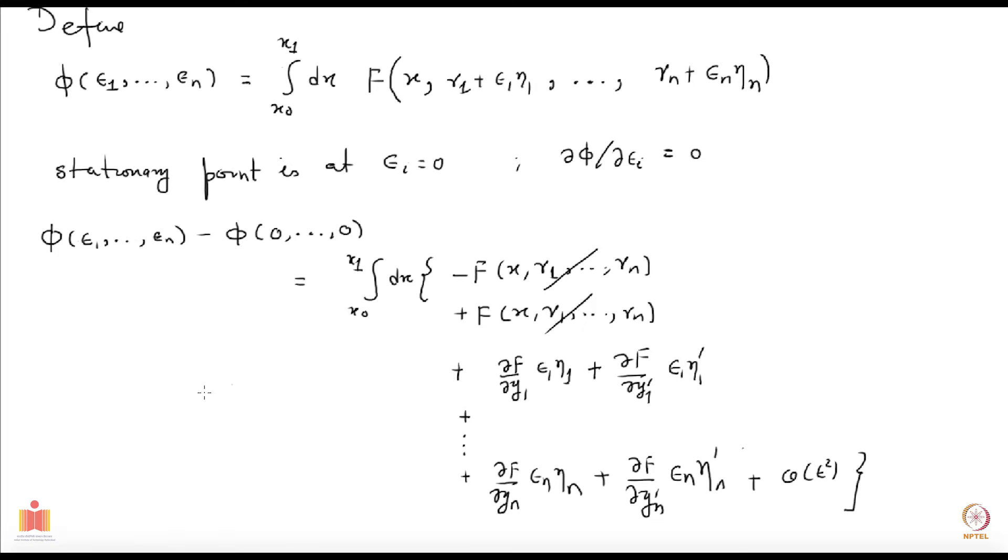And again I will use integration by parts and pull out the derivative from eta prime. This eta prime is d eta 1 over dx and I will put the derivative on this one and you will pick up a minus sign if you recall and then you will have a boundary term and that boundary term is going to vanish because your etas are 0 at the boundaries. That is what I am going to do and what you will have is the following.